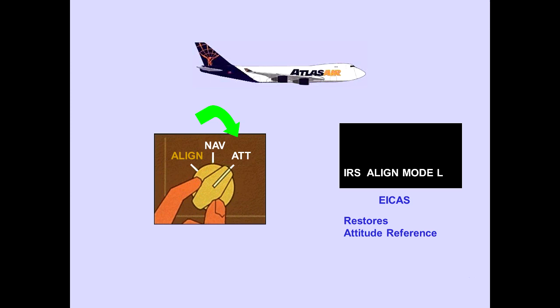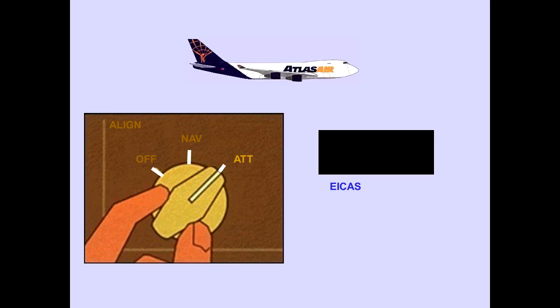In flight, the IRS's will not align to true north. Selecting the attitude mode restores the attitude reference for all the using systems. The EICAS memo message, IRS align mode, will be displayed while the airplane's attitude is determined. The airplane must be flown straight and level until IRS attitude alignment is completed. When complete, the IRS align mode message is removed and attitude information is supplied to affected systems. The IRU will enter an align mode for approximately 30 seconds.